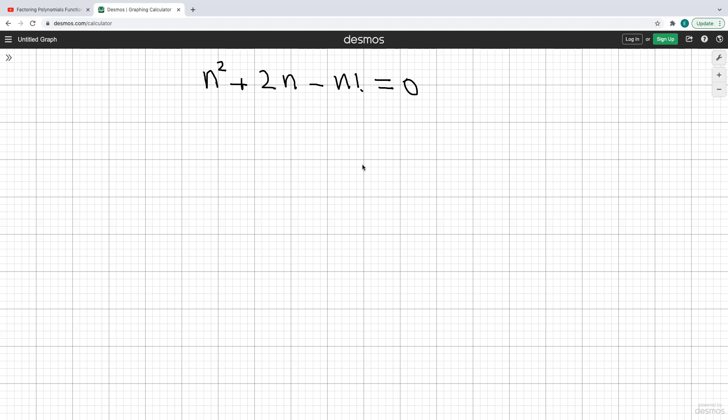So I think the first thing I'm going to do here, I'm going to move the n factorial to the other side so it becomes positive n factorial. I will rewrite this as n, so factor out the n, and then I'm going to get n plus 2 here.